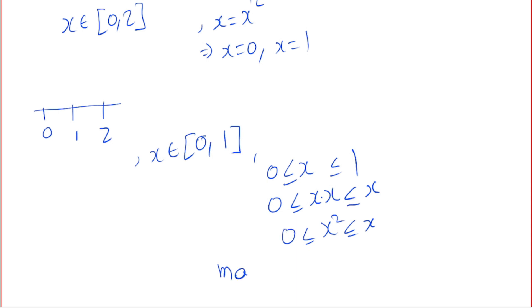So what is the maximum? If x squared is always smaller than x, then our maximum is x.